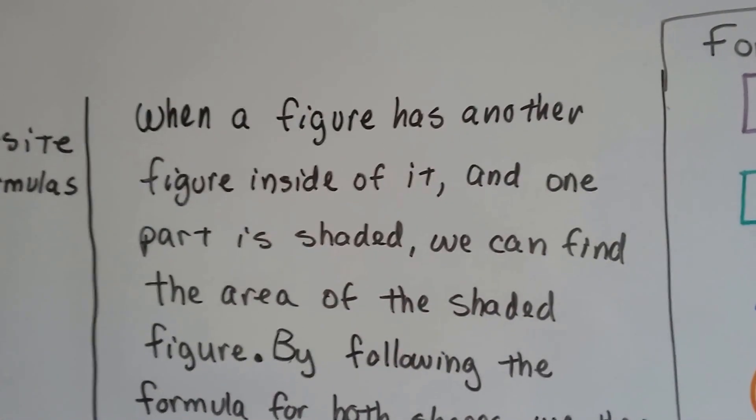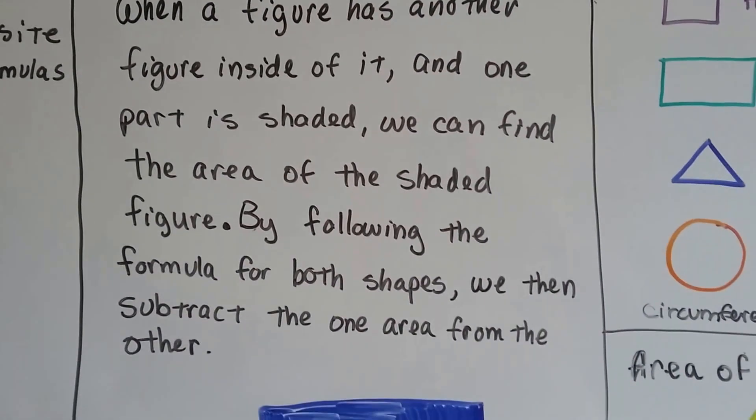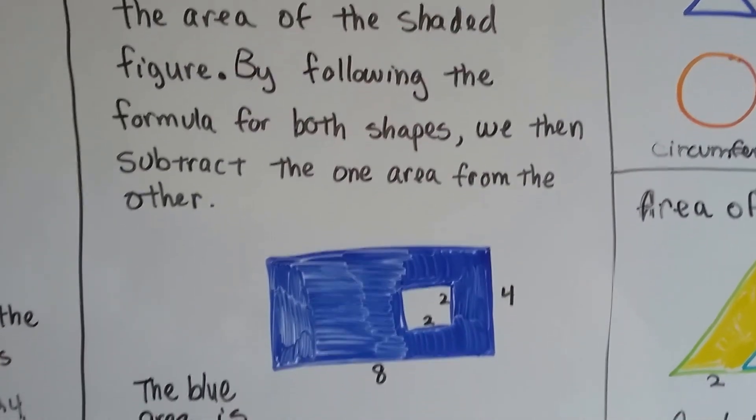When a figure has another figure inside of it and one part is shaded, we can find the area of the shaded figure by following the formula for both shapes. We then subtract the one area from the other.